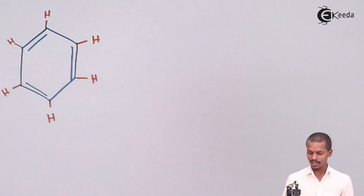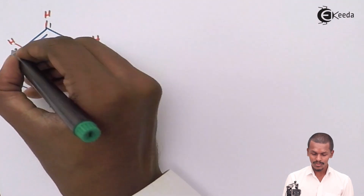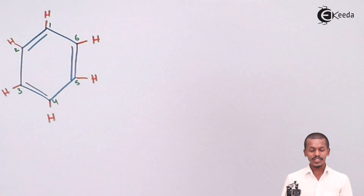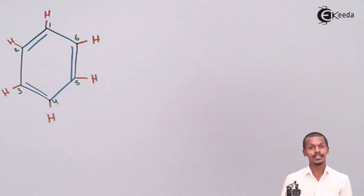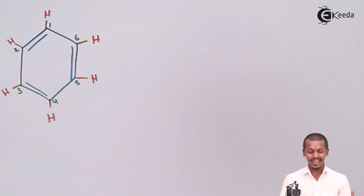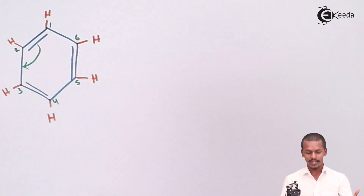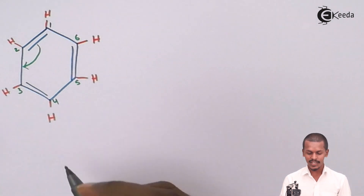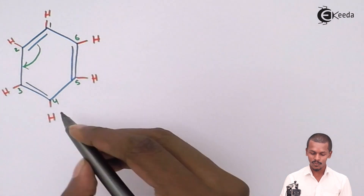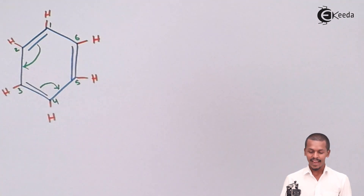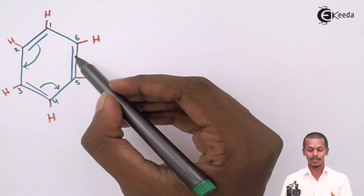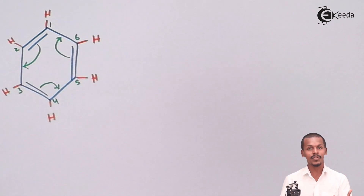If I number the carbons one, two, three, four, five, six — the pi electrons present in benzene have the capacity to delocalize from one carbon to another. The carbon atoms stay in their fixed positions. Suppose the double bond between carbon one and two shifts to between carbon two and three; similarly, the bond between carbon three and four shifts toward carbon four and five, and the pi bond between carbon five and six shifts to between carbon six and one.